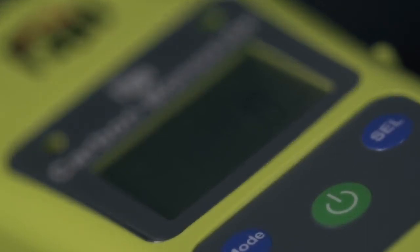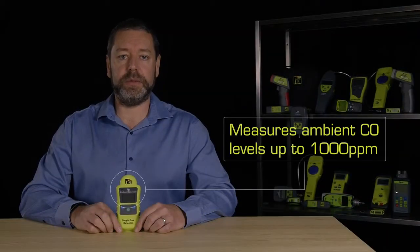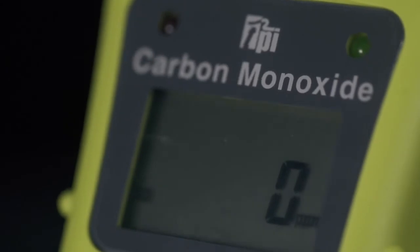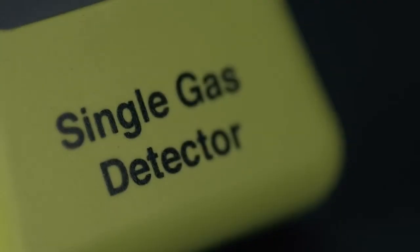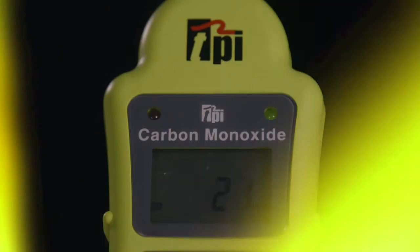This instrument will measure ambient CO levels up to 1000 ppm and will measure and record the peak value of CO since it was last switched off, with an alarm level set at 30 ppm.